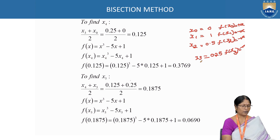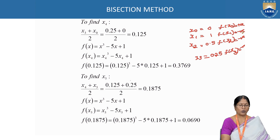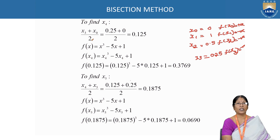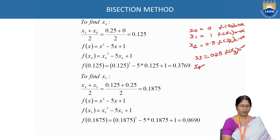To find x₄: x₃ is selected as the latest, giving a negative value. We skip intermediate points with the same sign and stop at f of x₀, which gives the positive value. Therefore x₄ = (x₃ + x₀) / 2 = 0.125. f of x₄ gives a positive value.